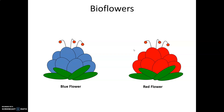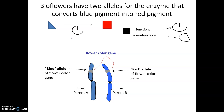Let's see how what we've learned applies to our bioflowers. In bioflowers, there's a pigment enzyme that converts blue pigment to red pigment. That pigment enzyme can be functional or non-functional. You can probably already think about how the types of proteins inside of a bioflower cell will determine whether that flower is blue or red. We're also going to explore what it means for a flower to have a blue allele or a red allele for the flower color gene.